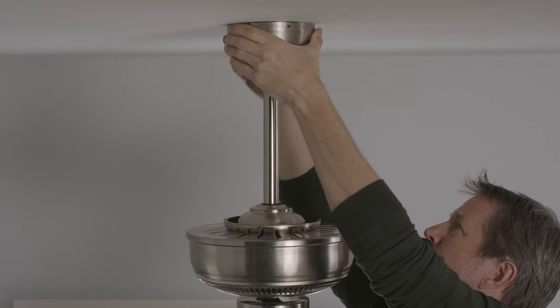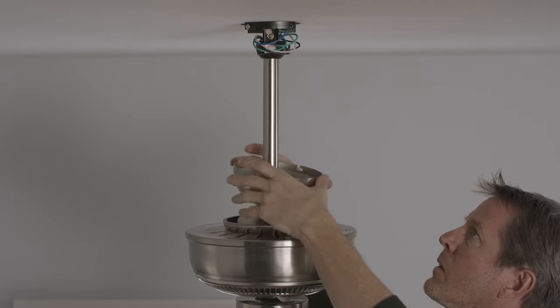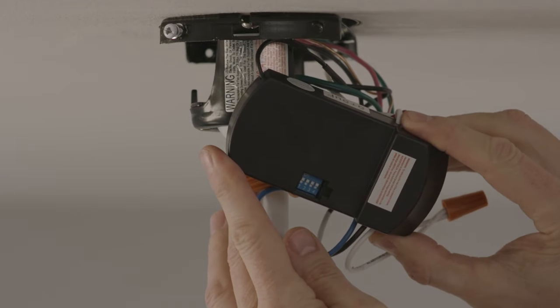To install a receiver after installation, lower the canopy to reveal the wiring and connect all the corresponding wires per the instructions.